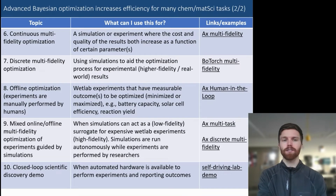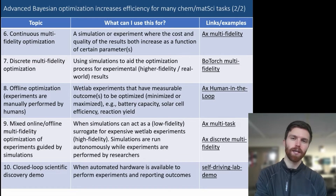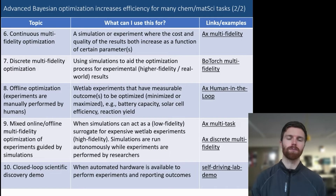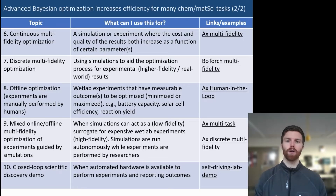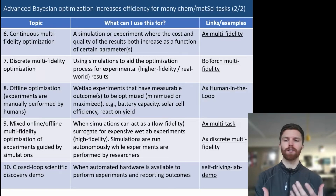In the next tutorial, we took a deeper dive into continuous multi-fidelity optimization, looking at how to implement that in the Service API and adjust some of the building blocks using the BoTorch backend. We looked at an example of discrete multi-fidelity optimization, as well as multi-task optimization, where you can use, for example, simulations along with experiments, or other types of cases where you have multiple information sources that you're trying to combine.